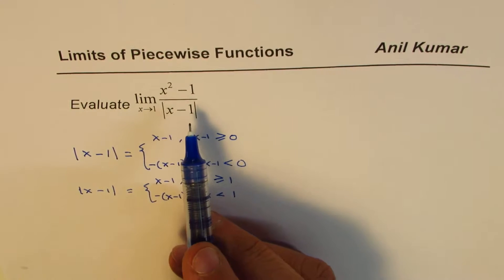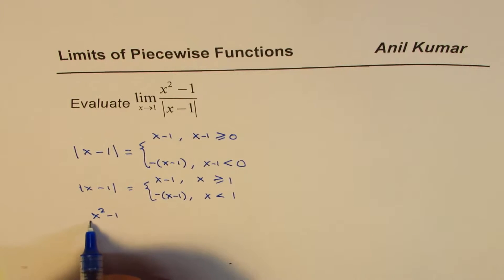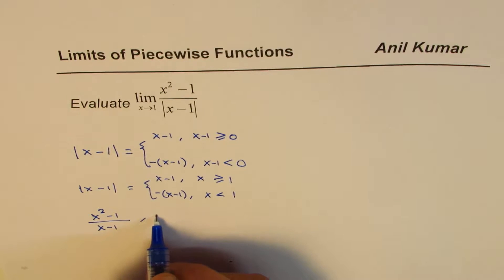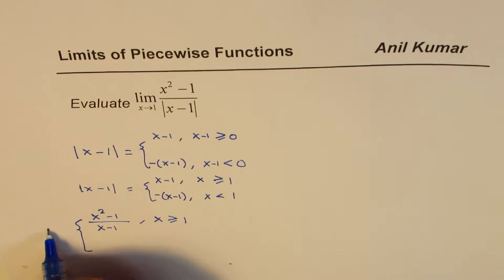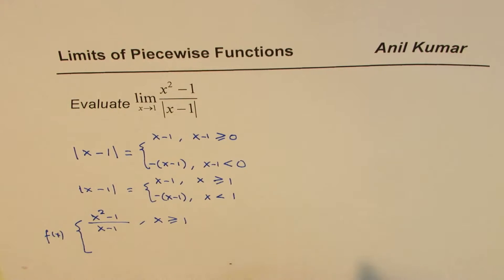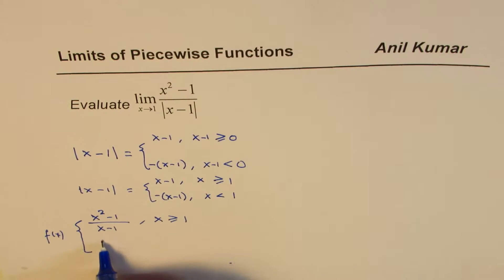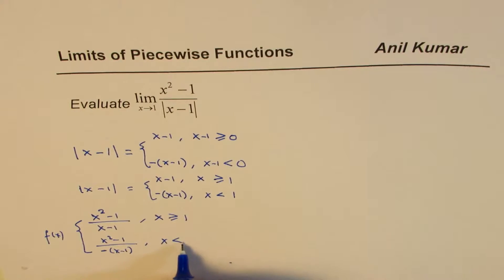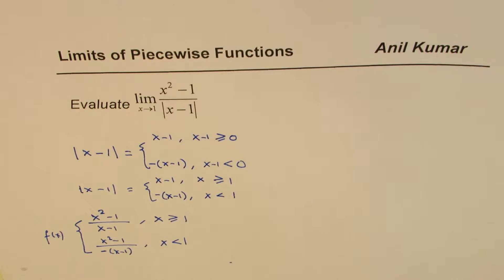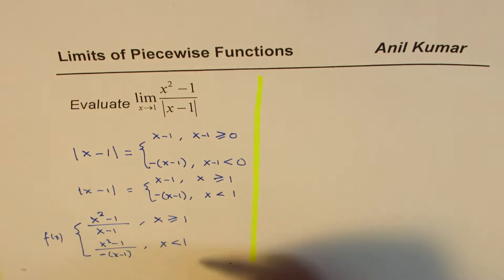We can now rewrite this function as a piecewise function. So it is x squared minus 1 divided by x minus 1, if x is greater than or equal to 1. And it equals x squared minus 1 divided by minus of x minus 1, when x is less than 1. I just described this function as a piecewise function.